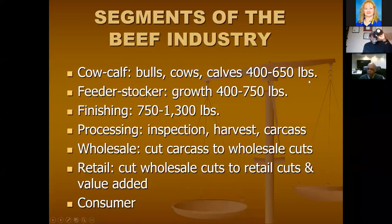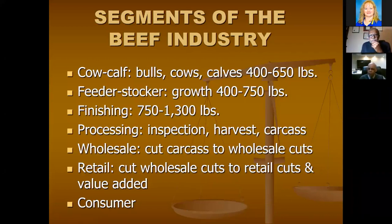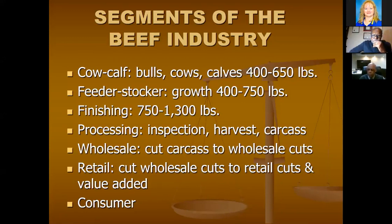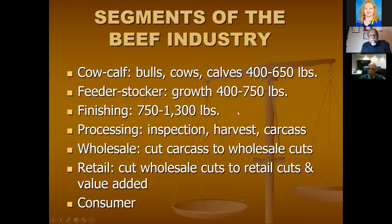The feeder-stocker will buy calves when they leave the cow-calf producer — anywhere from 400 pounds up to about 750 pounds, where he's growing them to. When they get to 750 pounds, he takes that group to another stockyard. A person will buy them for finishing, or feedlots. He's going to carry them from about 750 pounds up to what we call slaughter weight — somewhere around 1,300 pounds. That's what you call finished: they start to lay down fat on their body, no longer putting on muscle or much frame, and that's when they target the time to process them.